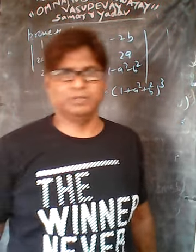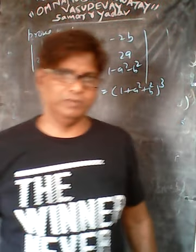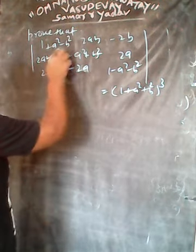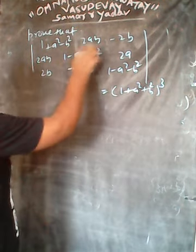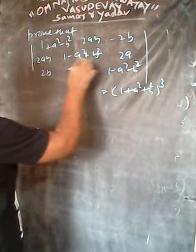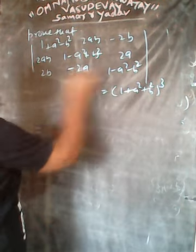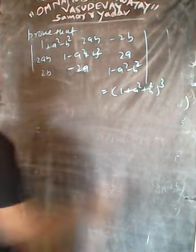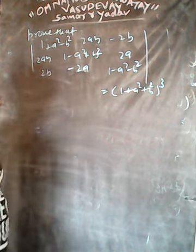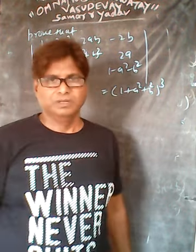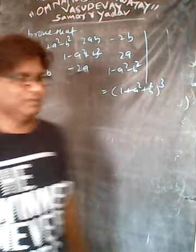Today is our determinant chapter. Now we will see one numerical. The numerical is given as: the 3×3 determinant with entries 1 plus a square minus b square, 2ab, minus 2b; 2ab, 1 minus a square plus b square, 2a; 2b, minus 2a, 1 minus a square minus b square — is equal to 1 plus a square plus b square cubed. Now, how to solve this?